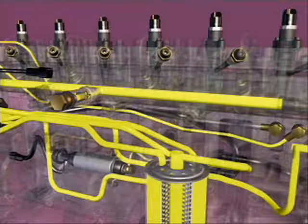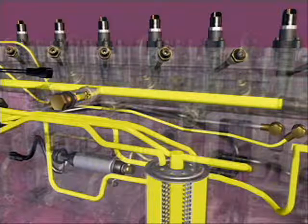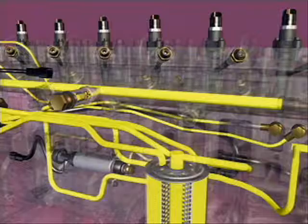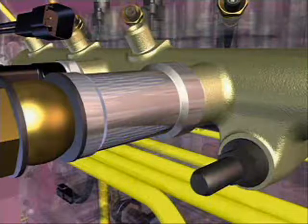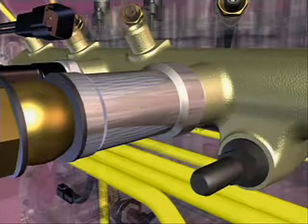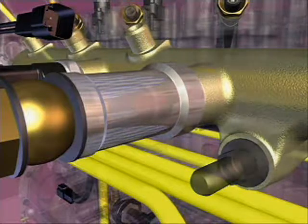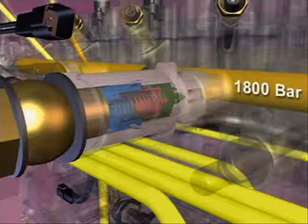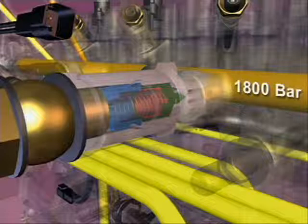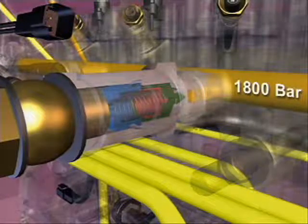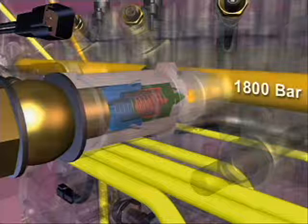When the fuel in the rail exceeds the valve setting, the valve opens and fuel is returned to drain. The fuel rail pressure relief valve is a two-stage valve. When closed, only a small area is exposed to the fuel in the rail. This makes the valve a fast-acting valve that opens at approximately 1800 bar.